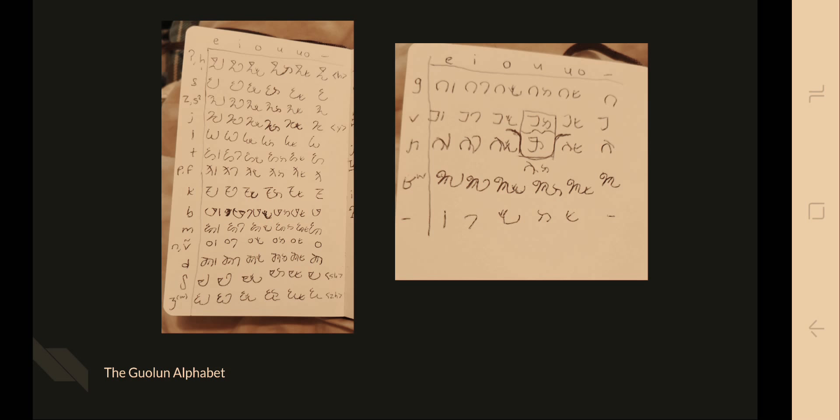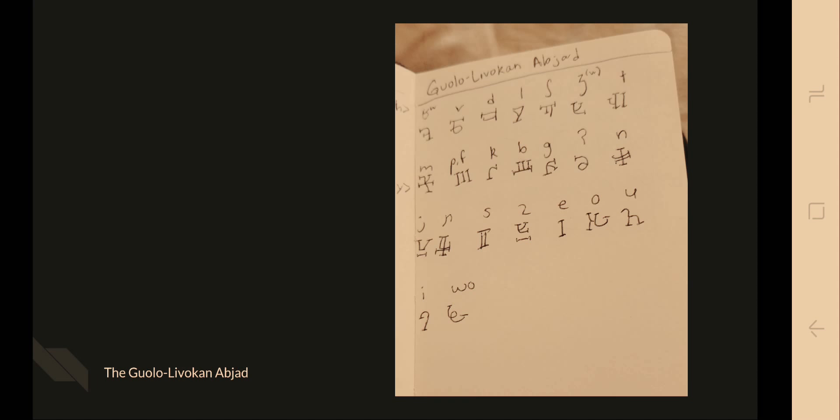This is the Gualan alphabet. It kind of looks like a syllabary, but it's not — it's an alphabet, it just connects some of the letters. The Gualolivokan abjad is not a pure abjad, but I don't think that any abjad is a pure abjad, so it's fine.